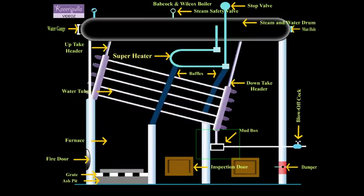Mud Box: Mud Box is located at the bottom end of the downtake header. The mud, clay particles or sediments present in the water gets collected in the mud box and is removed by opening the blow of caulk. When the blow of caulk is opened, water rushes through the mud box and thereby cleaning it.